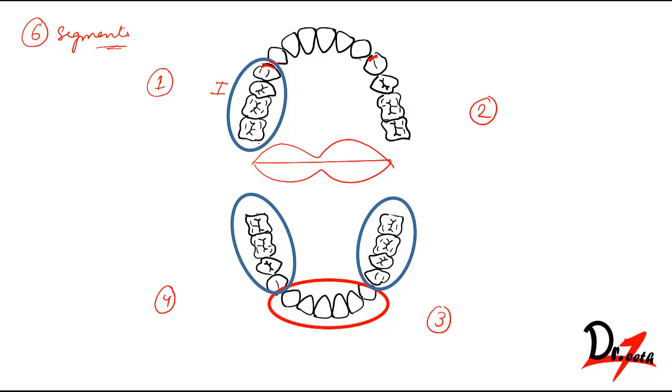Similarly, we have segment three, segment four, segment five, and segment six. We divide our arch into six segments and then we score.